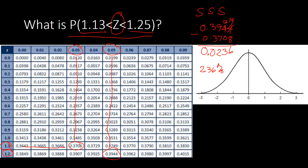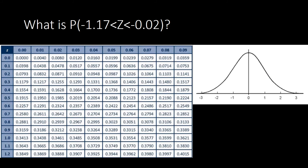Illustrating this, 1.13 is somewhere here and 1.25 is just a bit further — there is indeed a very small area between them, confirming our answer of 0.0236 is correct. Moving to the next example, we are again looking for the area between two z values. Since they have the same sign, we follow SSS — same side, subtract.